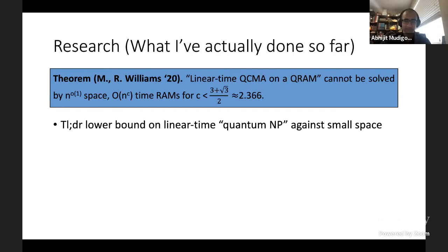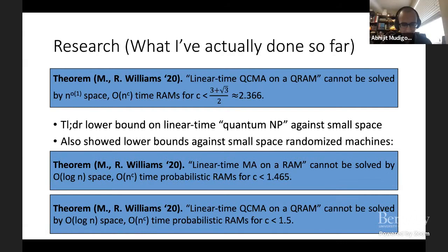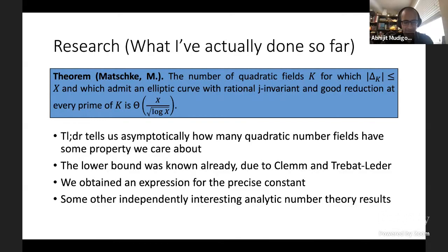After what I've actually done, I just, in the previous session, talked about a lower bound that I worked on with Ryan Williams at MIT, and that's on linear time quantum NP against small space. In particular, the theorem is that linear time quantum classical Marlin or Arthronic QRAM can't be simulated by a small space of n to the c time rams for c less than about 2.366. The lower bound is known already, but we got the upper bound, and in fact, the precise asymptotic constant.